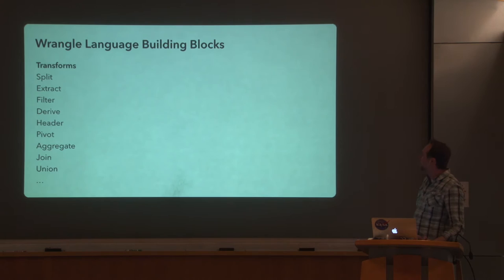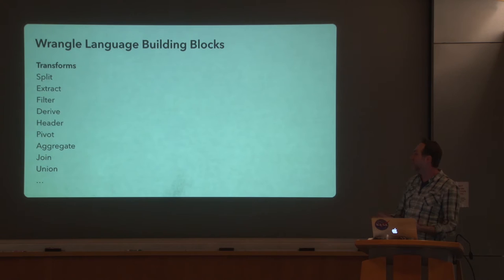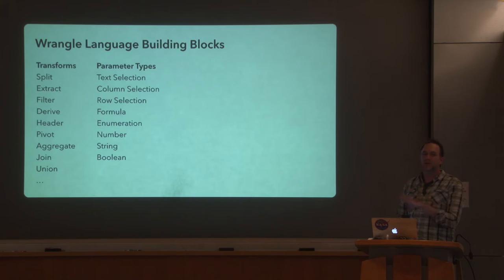Behind the scenes, what we're doing is search over a data transformation language. We have a bunch of different verbs: split a column into multiple columns, extract text from a column, filter, derive new values with a formula, up to more structural things like pivoting, creating aggregations, and joining and unioning with external tables. We try to keep a very small number of these transforms — the right set of operations that covers all the different types of transformations people need. Each transform might take multiple parameters, but we have a very small fixed set of parameter types: row selections, column selections, text selections.